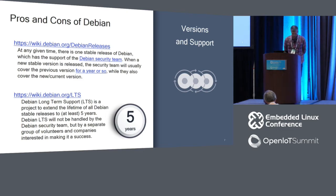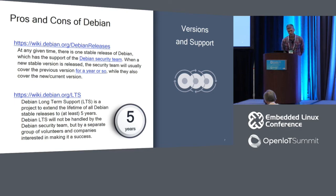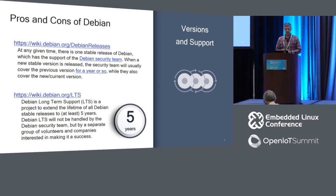Debian has stable and testing releases. At any given time there's one stable, one testing release with security team support. When testing moves to stable there's usually about an additional year of support from the Debian security team. There's also the Debian Long-Term Support group, which extends the lifetime of stable releases to at least five years — really great for companies that need to provide long-term support for platforms.